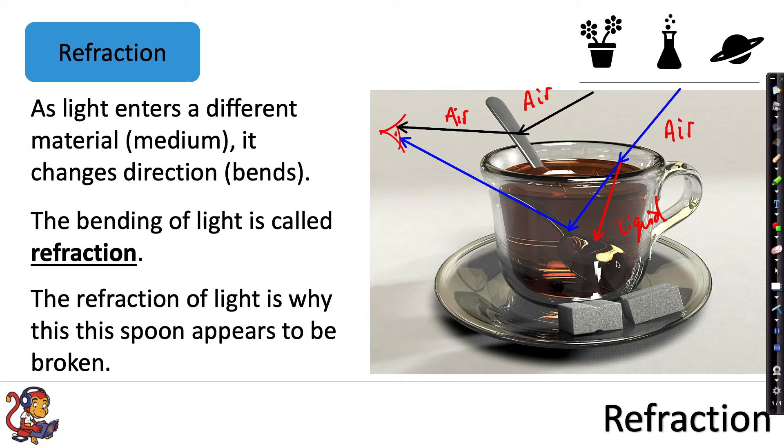And it's because of this refraction, this change in direction, that we do not see this spoon as we would expect it to appear. It appears to be broken because of this changing of direction as it's entering and then leaving a different medium before it enters the eye.